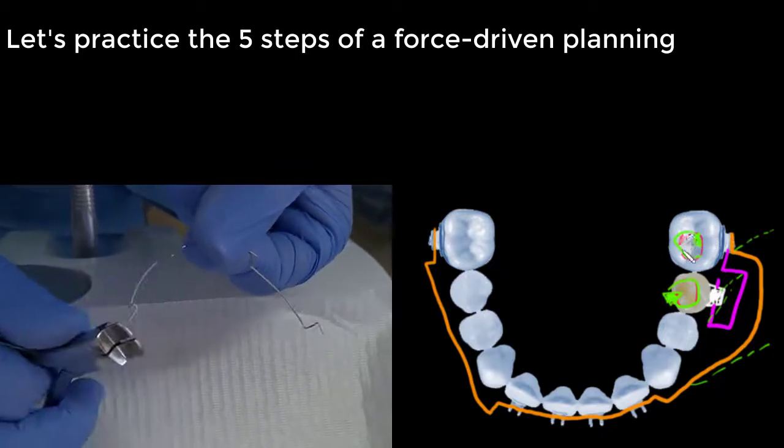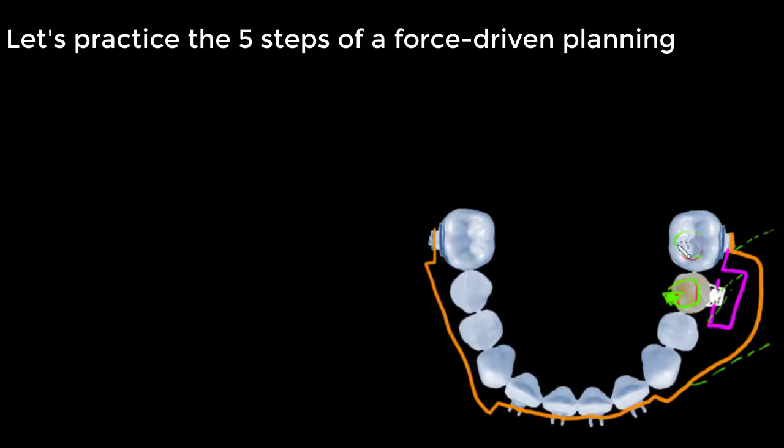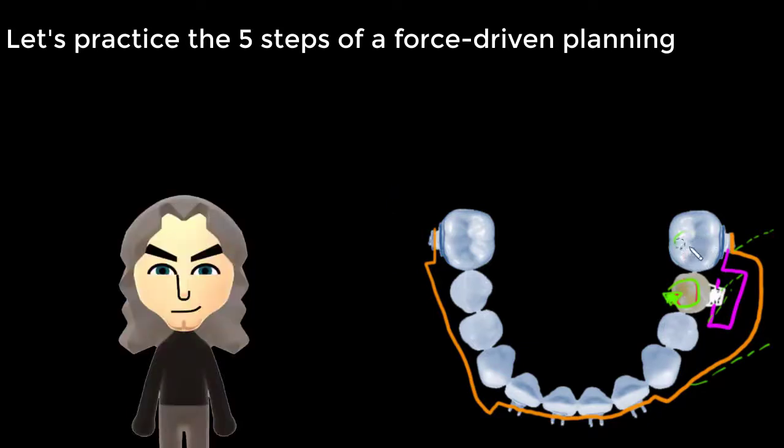And two bands in the utility arch will apply a couple to counteract the undesired couple produced by the loop. Therefore, only the active unit will move. This is a consistent system.